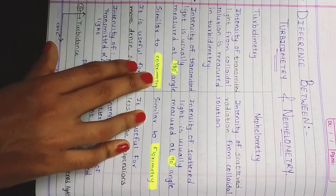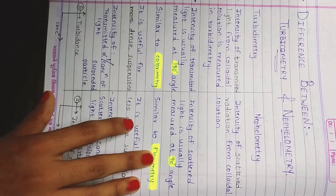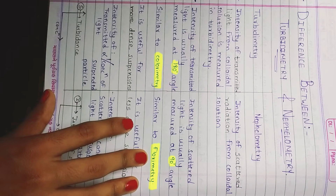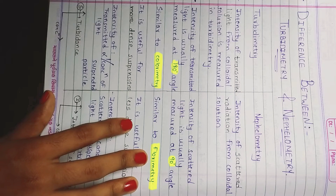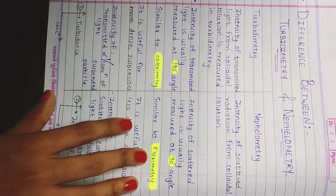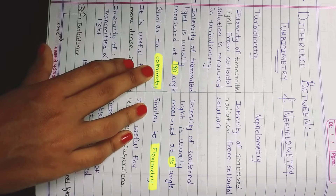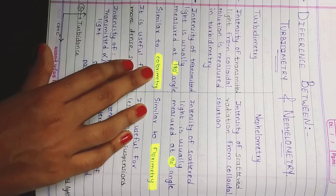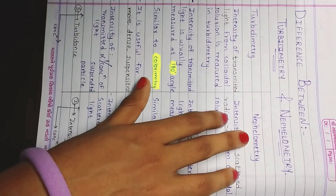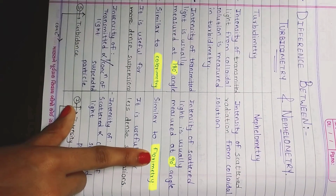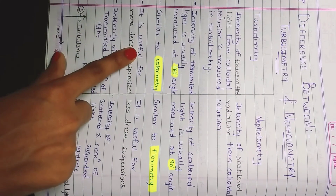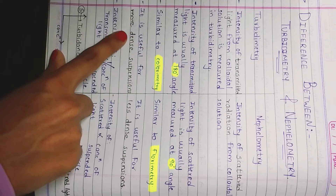The third difference: turbidimetry is similar to colorimetry, and nephelometry is similar to fluorimetry. MCQs are sometimes asked about this similarity, so remember that turbidimetry is similar to colorimetry and nephelometry is similar to fluorimetry.